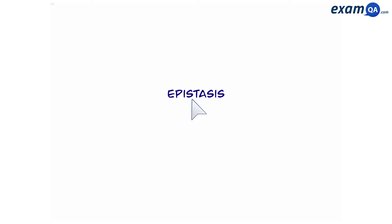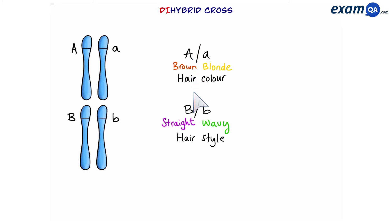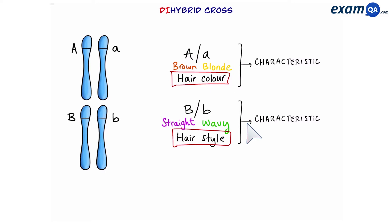Before we talk about epistasis, let's have a quick reminder of what happens during a dihybrid cross. In a dihybrid cross we have two genes — gene A and gene B — and we can see that each gene codes for a particular characteristic. For example, gene A codes for hair colour whereas gene B codes for hairstyle.